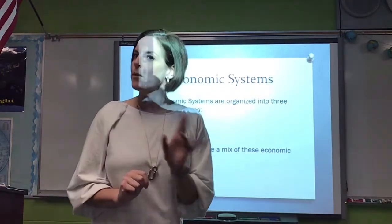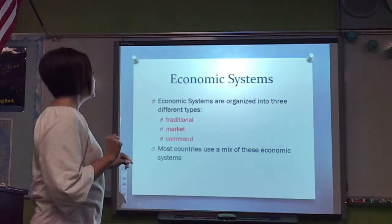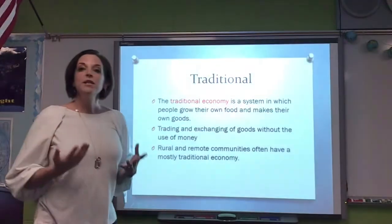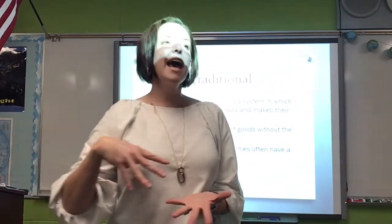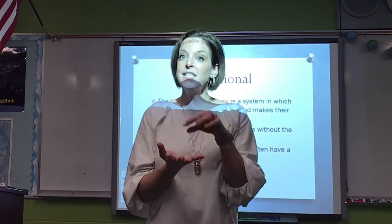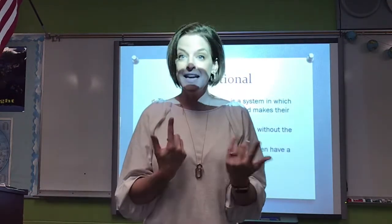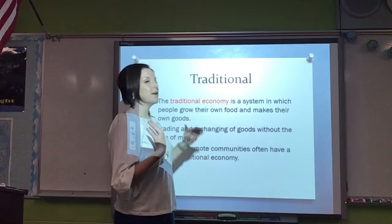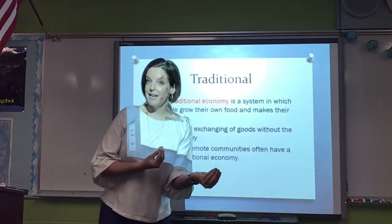Now we're going to talk about economic systems — we brought this up in class last Monday when we watched Human Planet. We have a traditional economic system, a market, and a command. Traditional is when we discussed the people who lived within that coral reef, who really didn't have a form of currency. Instead, they would trade seafood for rice or seafood for fuel — no money was exchanged. A traditional economy is when people grow their own food and make their own goods, then trade and exchange. This was early American history as well.